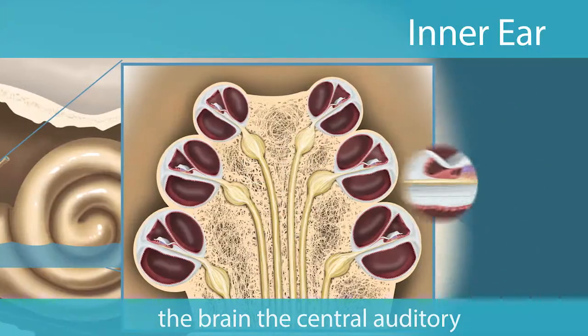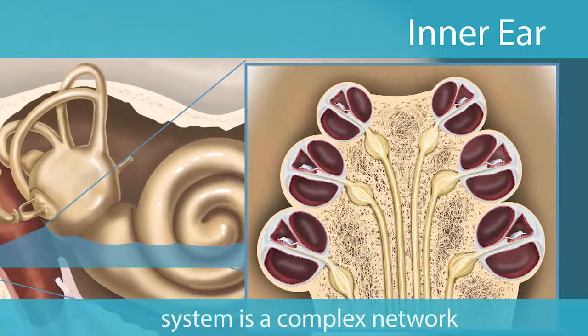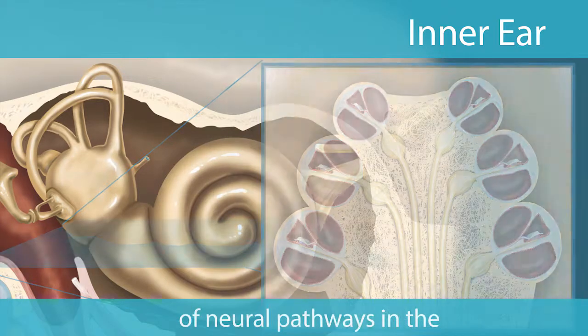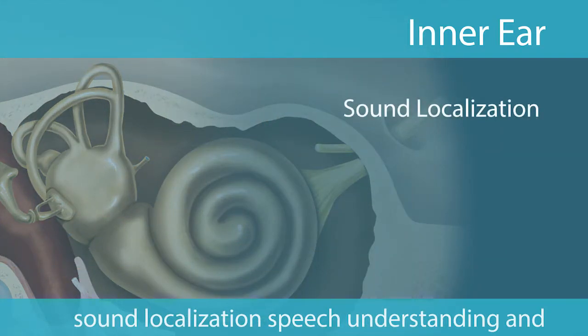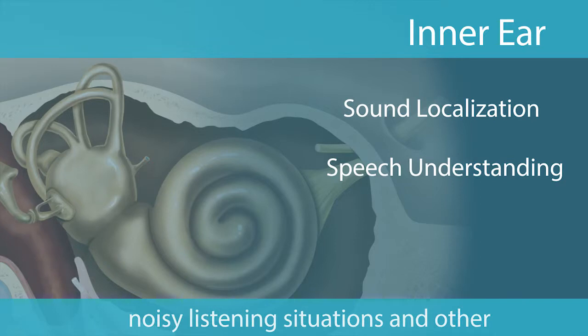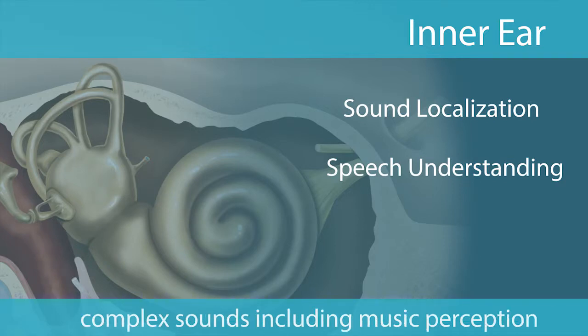The central auditory system is a complex network of neural pathways in the brain responsible for sound localization, speech understanding in noisy listening situations, and other complex sounds including music perception.